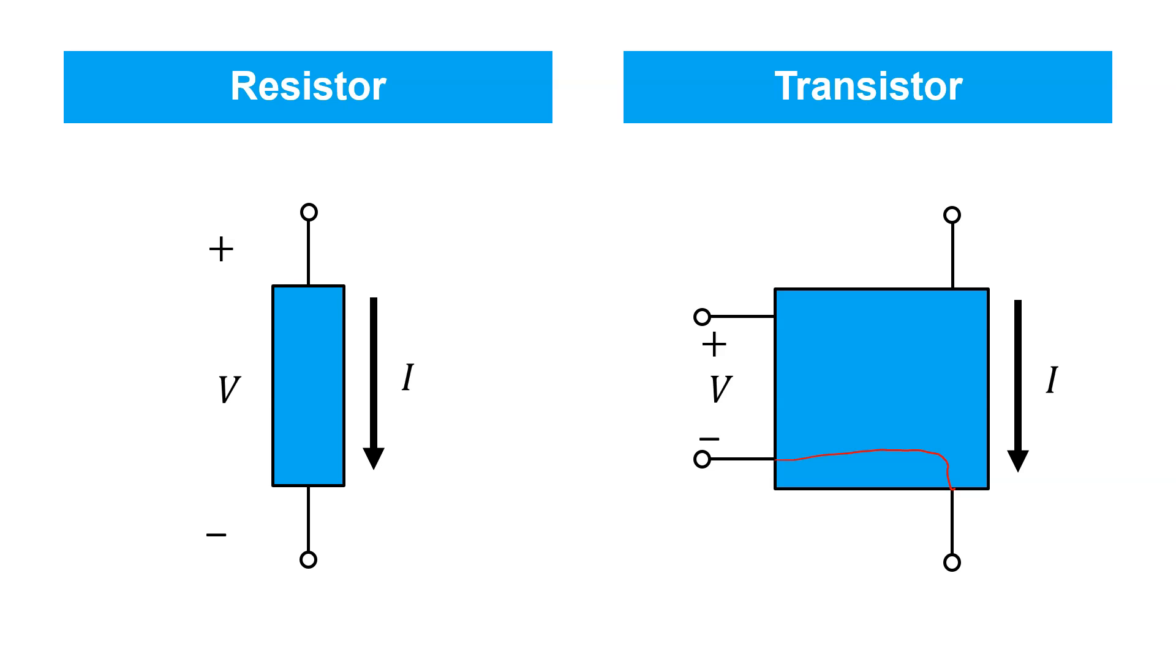Now, the diode is also a two-terminal device, where the current between the two terminals is related to the voltage across them. But in that case, the relationship is nonlinear.